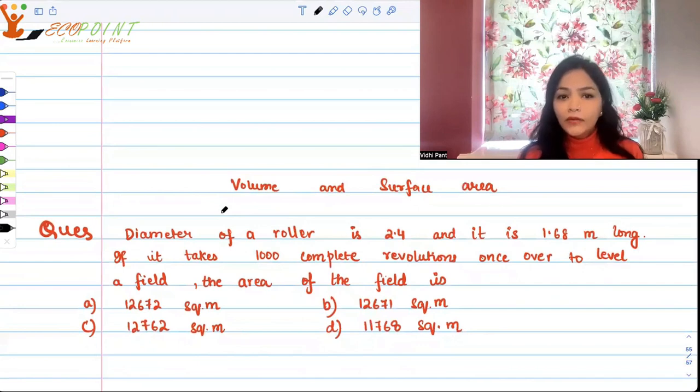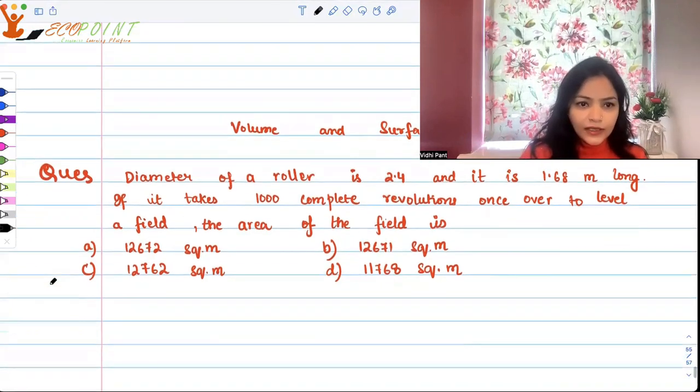Here's the first question: diameter of a roller is 2.4 meters and it is 1.68 meters long. If it takes 1000 complete revolutions once over to level a field, what is the area of the field? These are the options given to us.